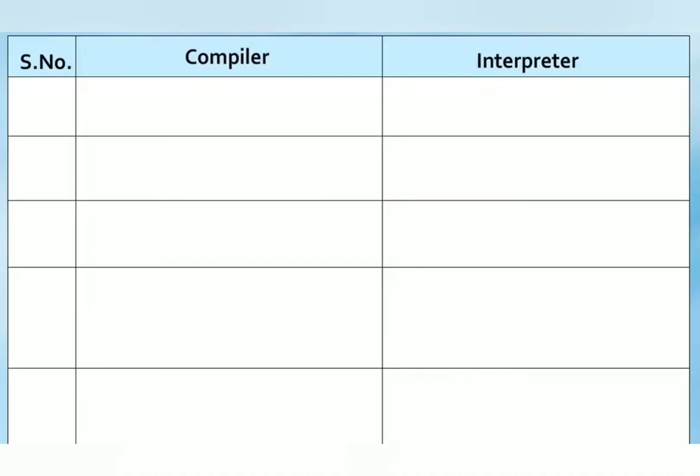Compiler translates the complete program at one time. Interpreter translates whole program line by line, one line at a time.